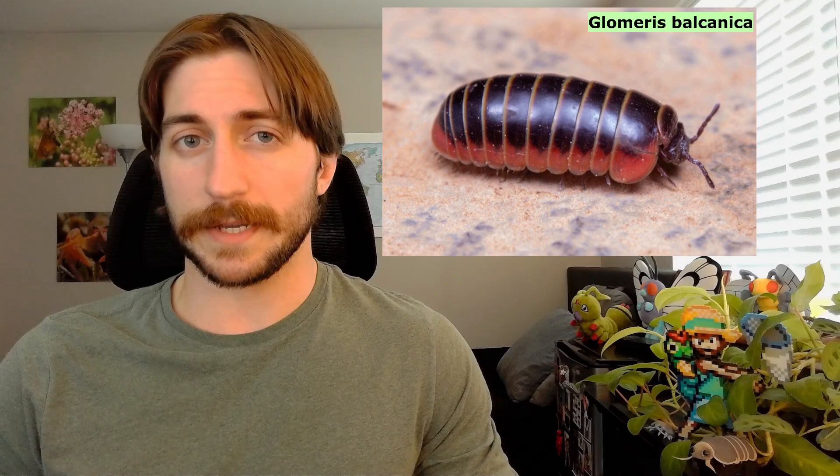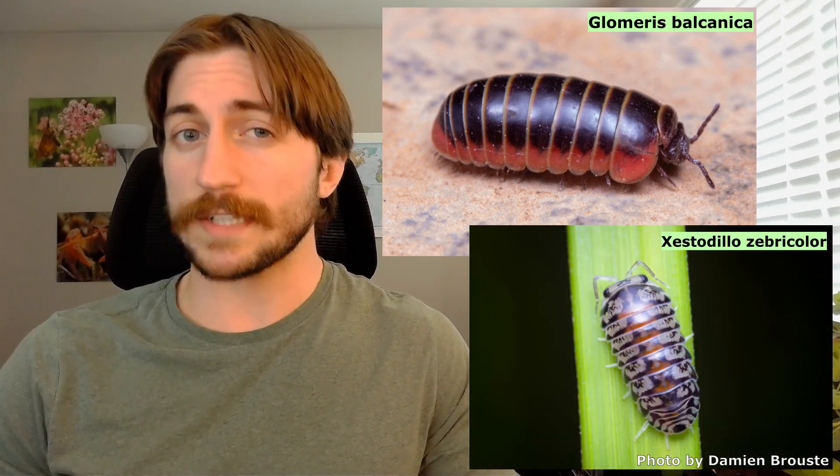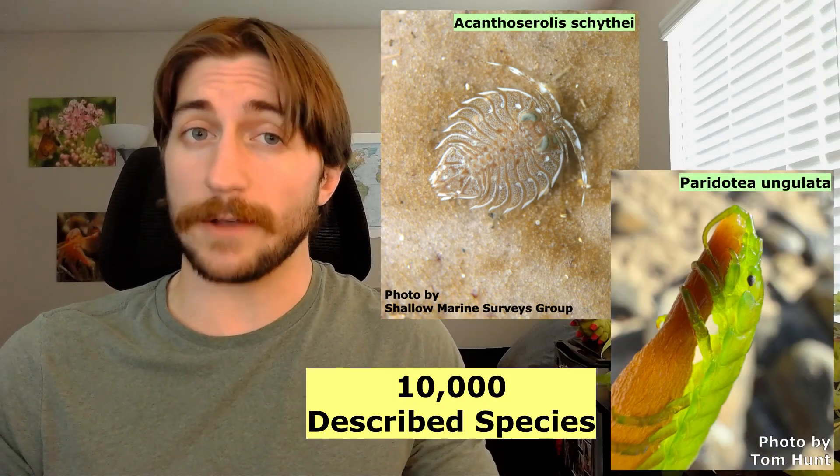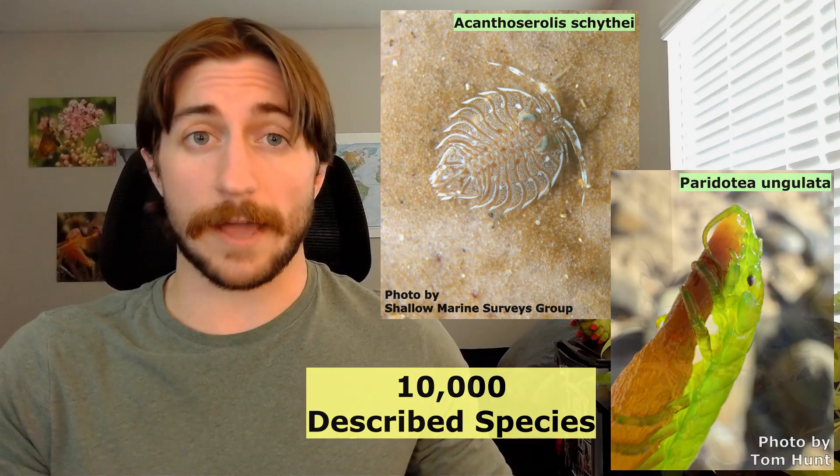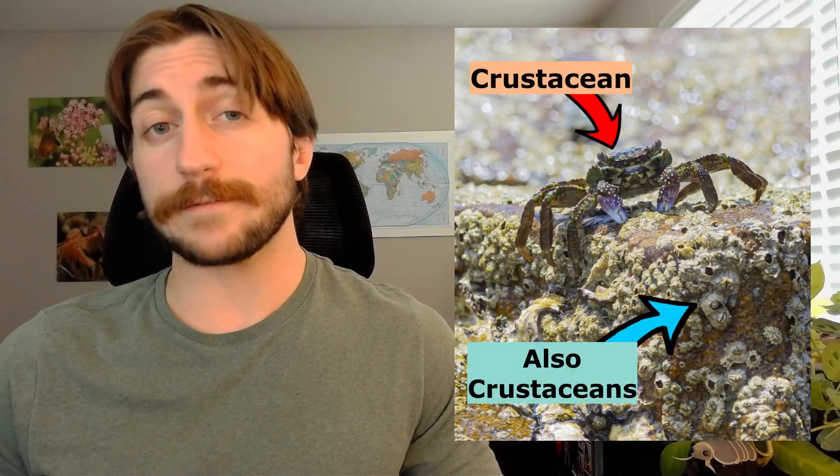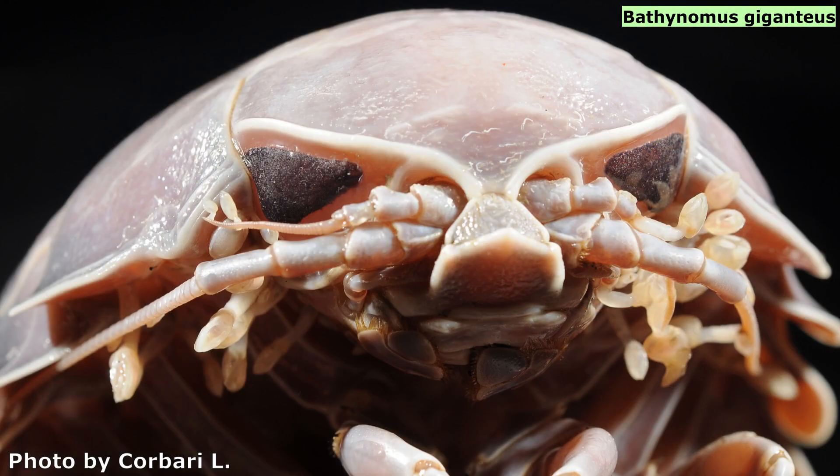Better known as the isopods, these critters were believed to have originated in the Carboniferous period over 300 million years ago. Now they can be found worldwide, from deserts to Antarctic oceans. Isopods are not insects, as you might have guessed, but more surprisingly they're not myriapods either. This is a pill millipede — it's a myriapod. This is an isopod — it's a crustacean. These are two completely different groups, and isopods are actually more closely related to insects than they are to pill millipedes.